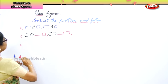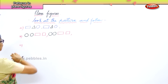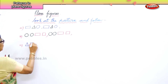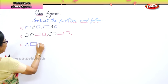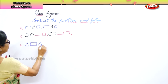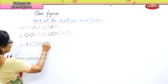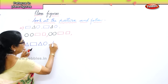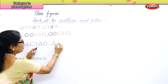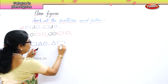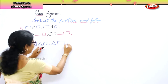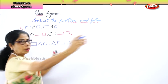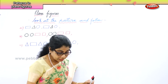Next you have triangle, square, triangle, circle. So what do you need to do? Follow the same: triangle, rectangle, triangle, circle and go on. Following the pattern.